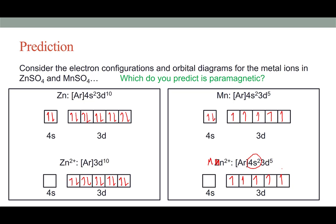Looking at the orbital diagrams for Zn²⁺ and Mn²⁺, which of these materials would you predict is paramagnetic and how could we test that?